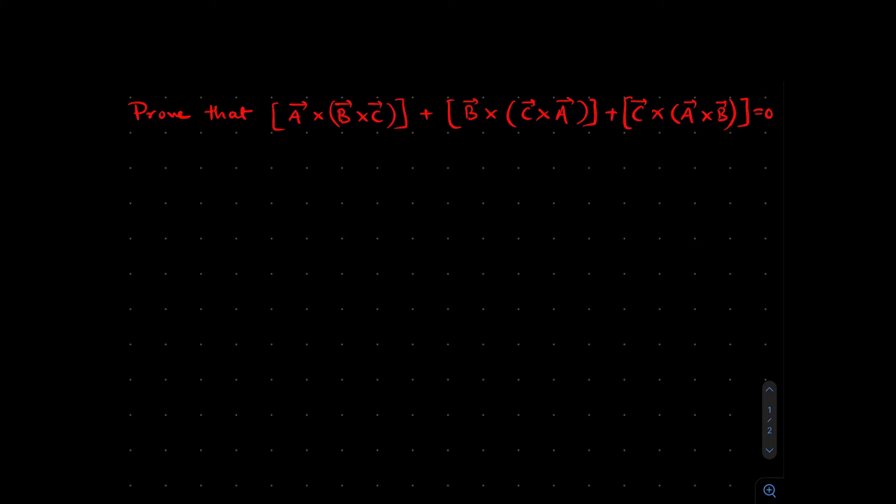Hello everyone. Today we'll be solving problem number 1.6 from Introduction to Electrodynamics by David J. Griffiths. The problem statement is as follows: Prove that A cross (B cross C) plus B cross (C cross A) plus C cross (A cross B) equals zero.